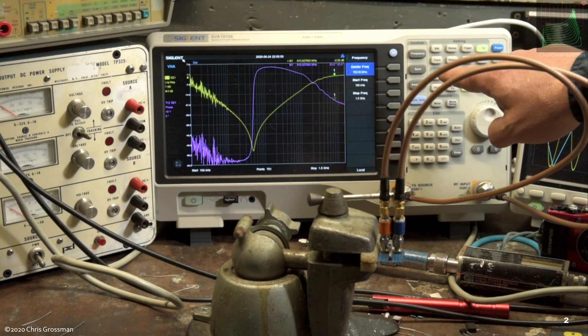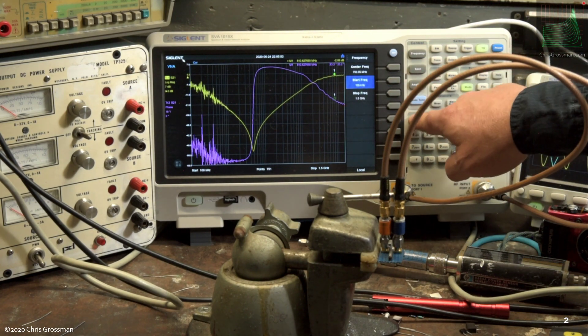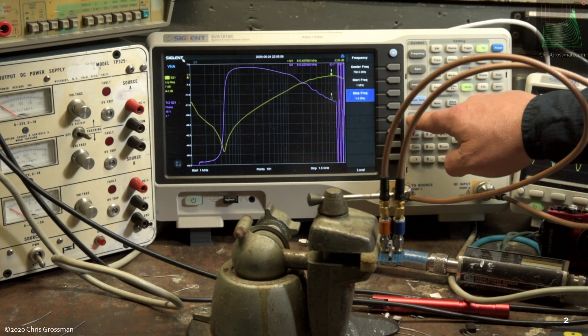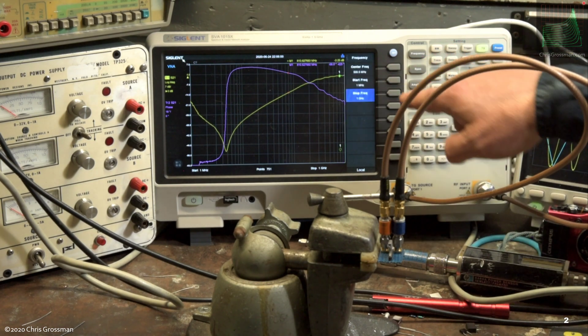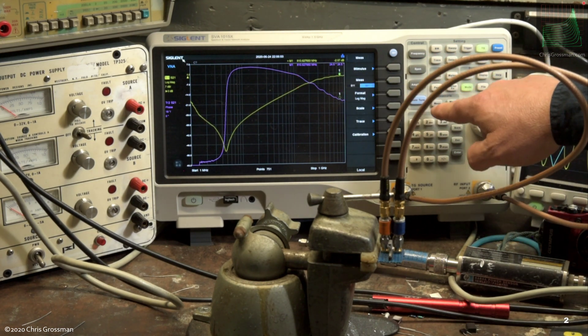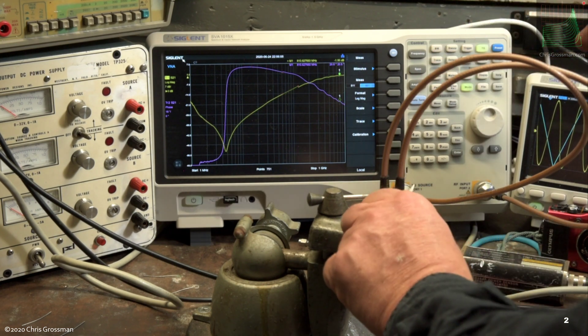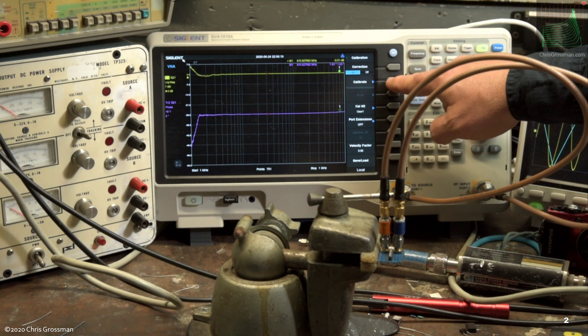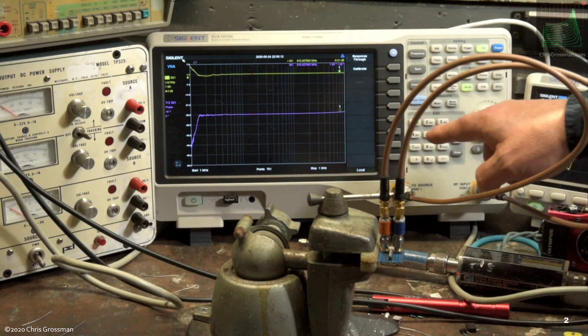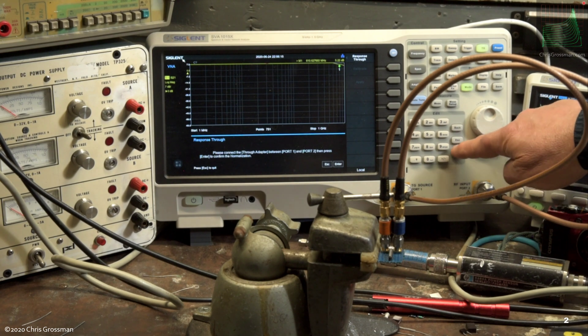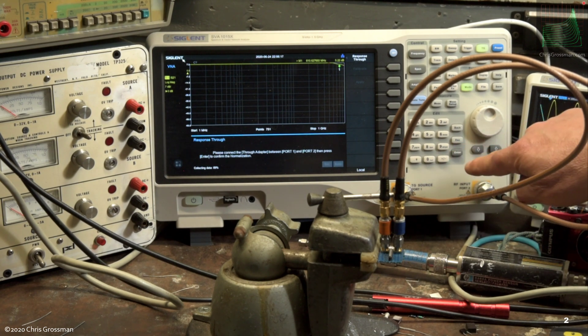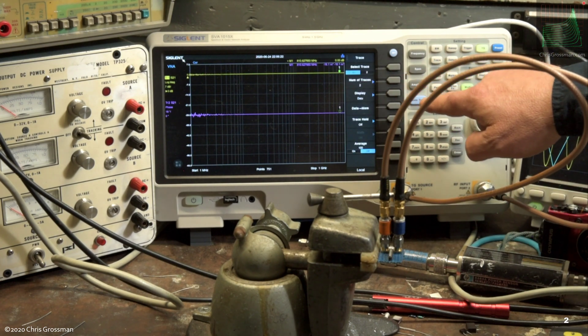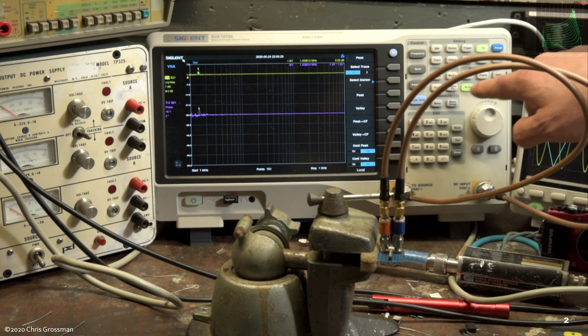To do that, I hit the frequency button, hit the start frequency, select 1 megahertz, hit the stop frequency button, hit 1 gigahertz. Then I have to calibrate the fixture now. So I just do a through cal with nothing in the fixture. So now I've done the through cal. I'll turn the traces back on and go to peak mode.